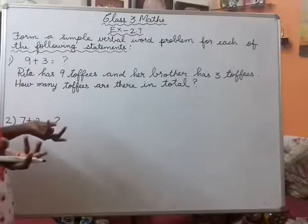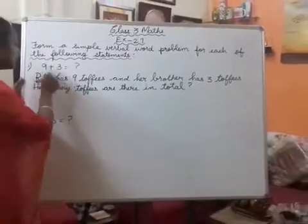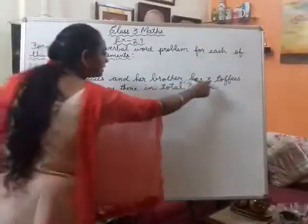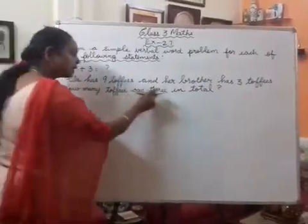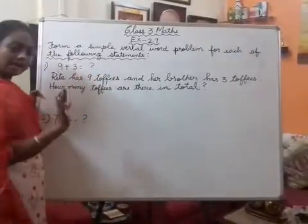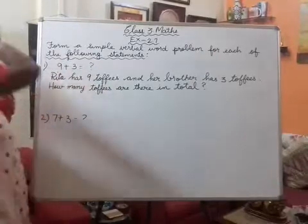you can frame anything like this. I have written it like this. Rita has 9 toffees and her brother has 3 toffees. Okay, how many toffees are there in total? Total means together, how much does she have? You don't have to write the answer, just frame the question. Okay, next.